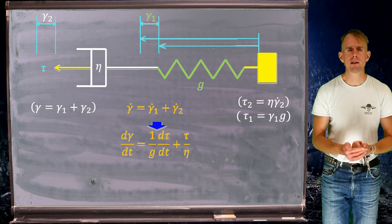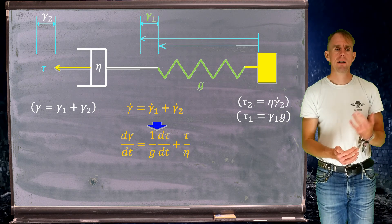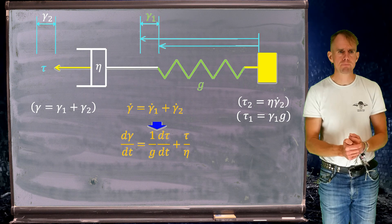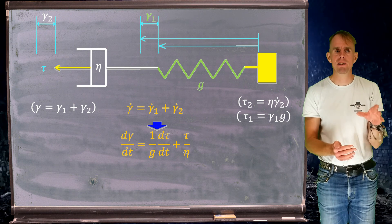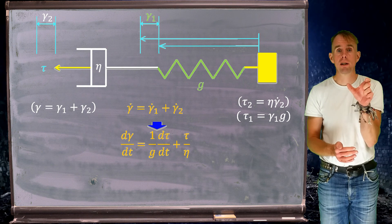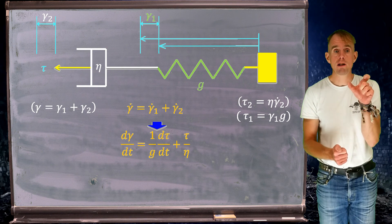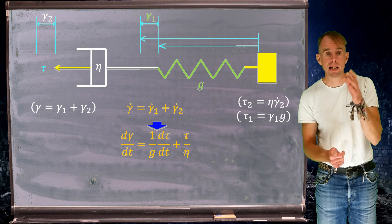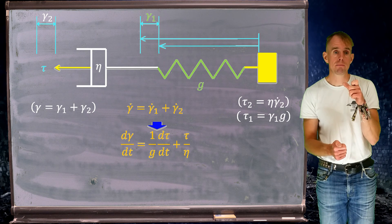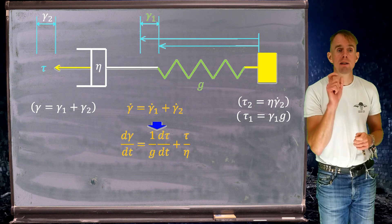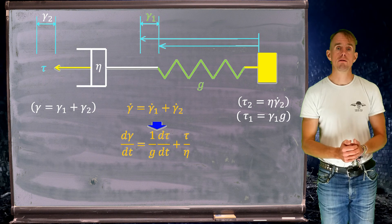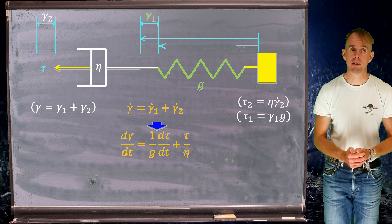If we do that, we find this equation. d gamma by dt, the strain rate of the Maxwell element, is 1 over g d tau by dt—that comes from differentiating the spring stress expression, so d tau 1 by dt equals d gamma 1 by dt times g. On the right hand side, tau over eta is just a rearrangement of the strain rate stress expression for our viscous damper.